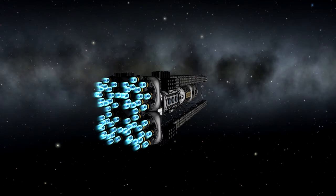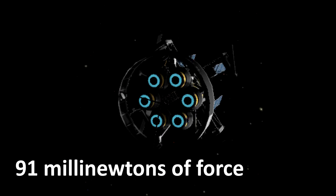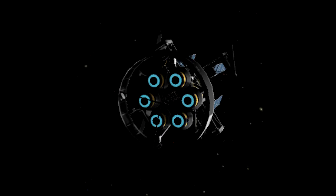So after all this, why don't we use ion thrusters for our space missions? Well, the ion thruster produces 91 millinewtons of force. At maximum throttle, it will take 4 days to go from 0 to 60 miles per hour.